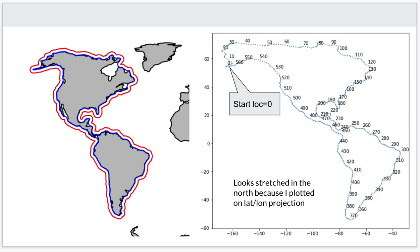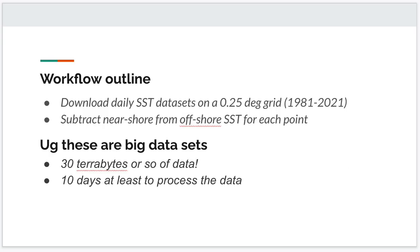I wanted to apply Howard's algorithm to these points. The workflow was actually really simple: download daily SST datasets for half the globe on a small grid, then subtract the nearshore SST temperature from the offshore SST temperature for each pair of points. However, these are very big datasets — to do this would be around 30 terabytes of data.